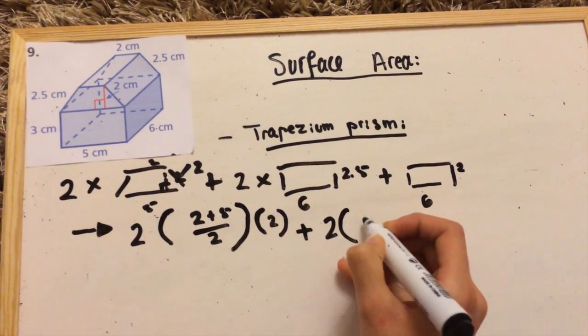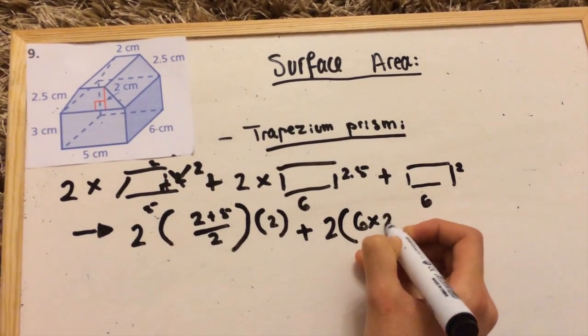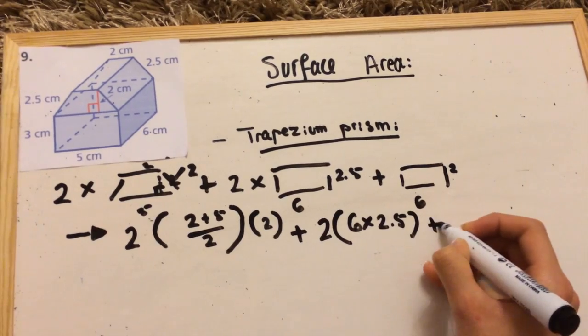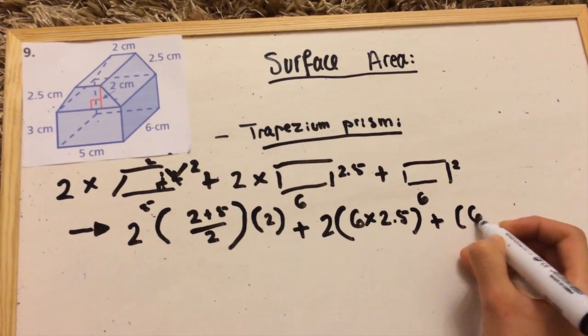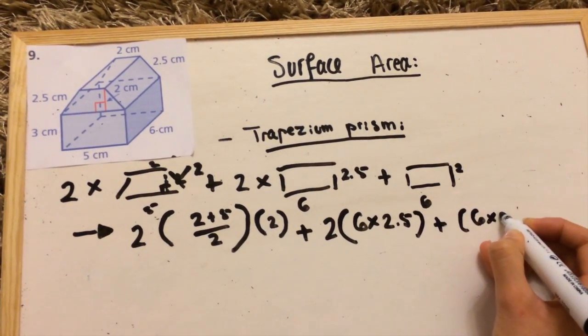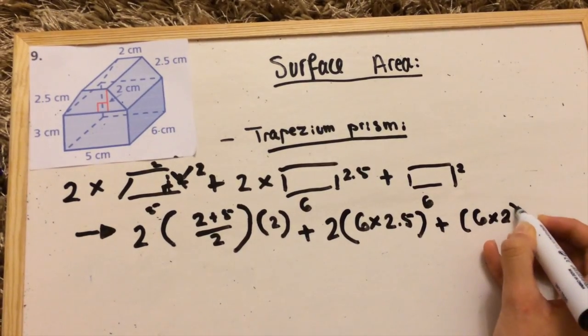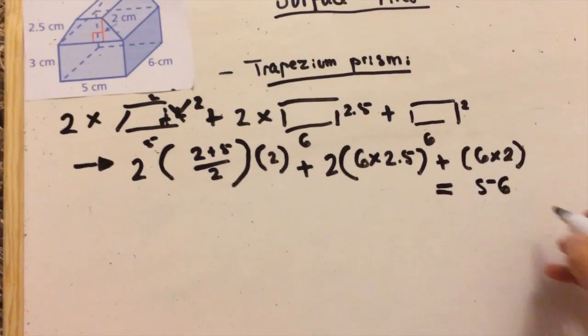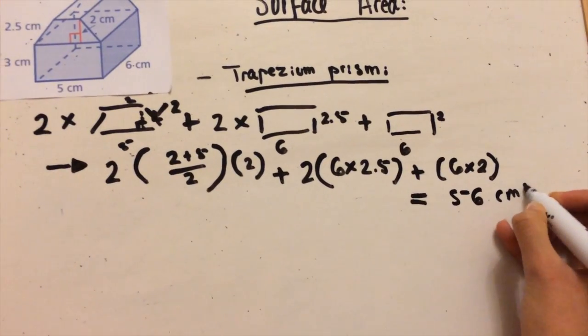And then we add the rectangular area. You find the area of the rectangle by multiplying the width times the length. So that's 6 times 2.5 and 6 times 2. Your answer is 56 centimeters squared. Don't forget to box that answer.